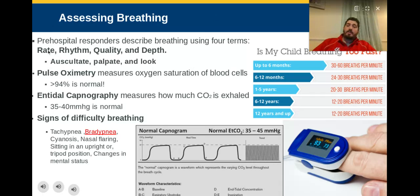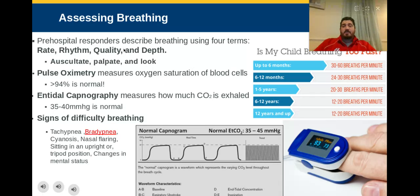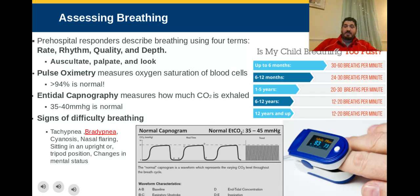Those are our big four — rate, rhythm, quality, and depth — and we really don't need much to assess them besides our eyes, a stethoscope, and a watch for vital signs. A lot of times you don't even need a stethoscope; you can just listen for wheezing or funny sounds. Let's talk about some newer types of technology that help us get a good grasp of what's going on for the patient.